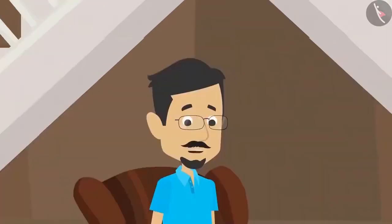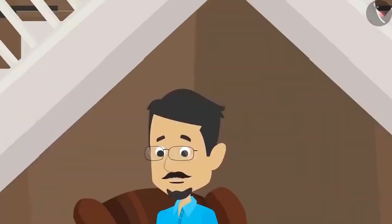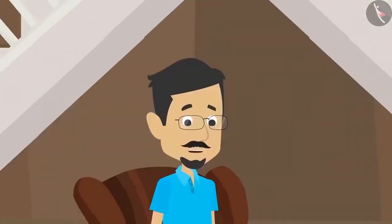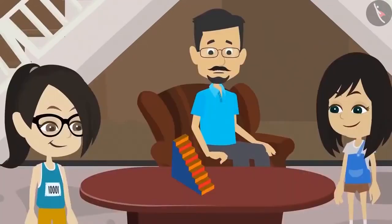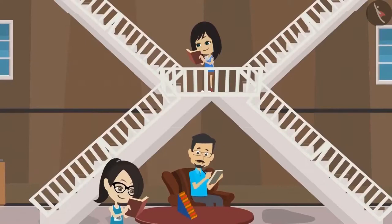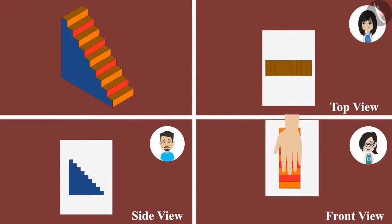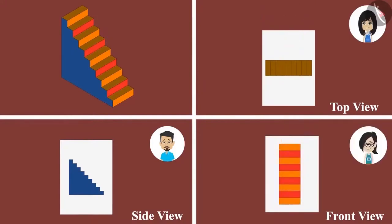We will make this picture from different angles. I will make it from here — I can see this side. Vandana, you make it from here because you can see it from the front. And Neha, you make it from upstairs because you will then be able to see it from the top. I have completed the drawing from my side. Even mine is complete. Even I have completed it. The three of us have made a picture of the same staircase seeing it from different sides. That's why each of our drawings look different.